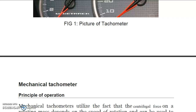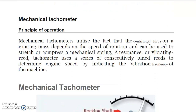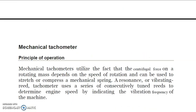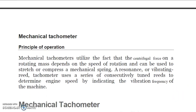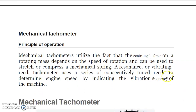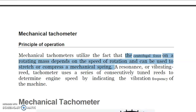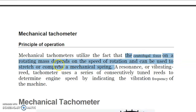To classify tachometers, there are two types: mechanical tachometer and electrical tachometer. The mechanical tachometer utilizes the fact that the centrifugal force on a rotating mass depends on the speed of rotation, and can be used to compress or stretch a mechanical spring.